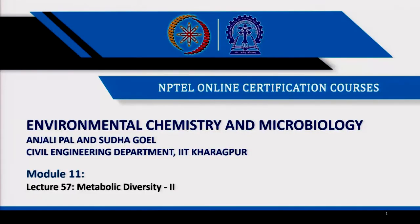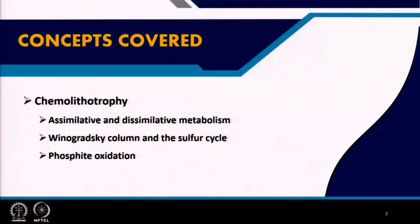Welcome everyone to lecture number 57 of module 11. This is the second part of metabolic diversity. In this particular lecture, we are going to look at chemolithotrophy after having seen phototrophy. Chemolithotrophy is a very large part of the metabolic diversity that we are going to be looking at. I will first define assimilative and dissimilative metabolism and then we will take a look at the Vinogradsky column, the sulfur cycle and phosphite oxidation which is also part of the sulfur cycle.